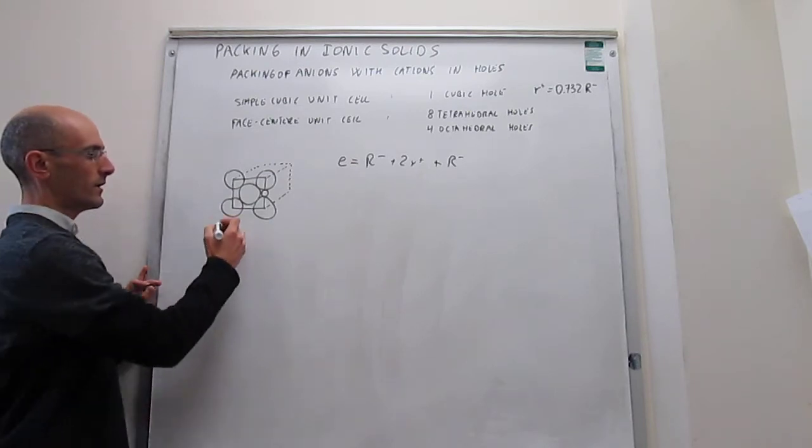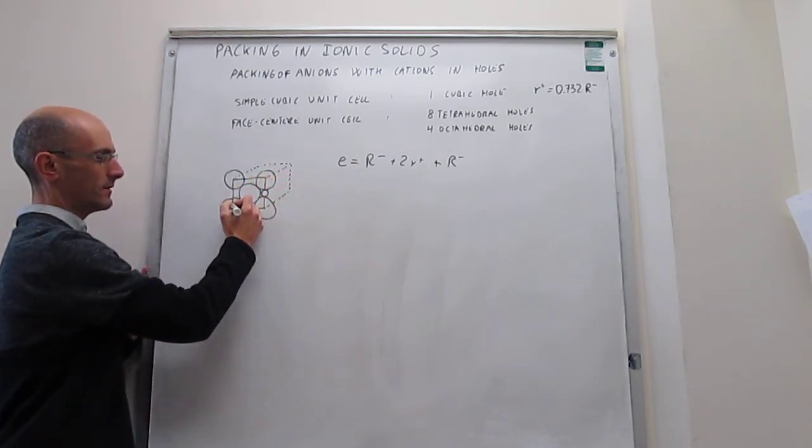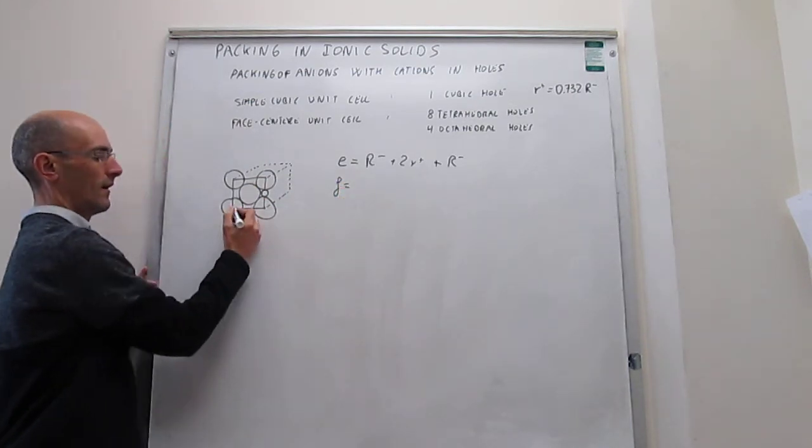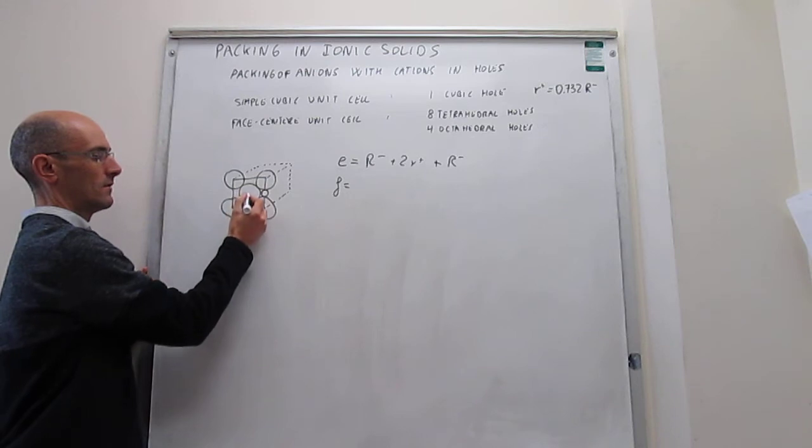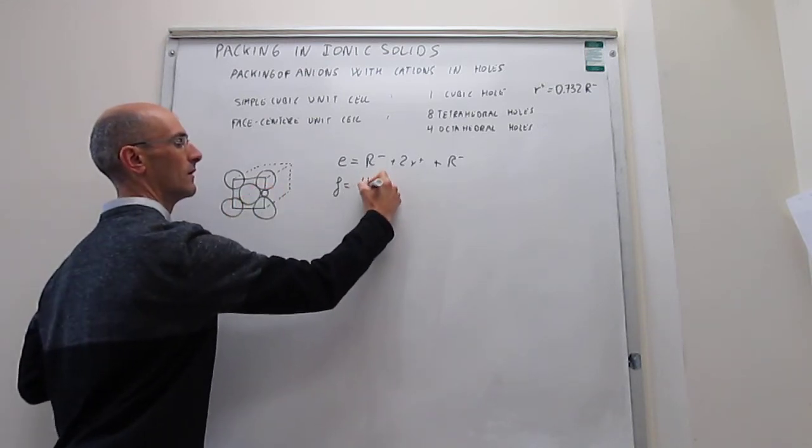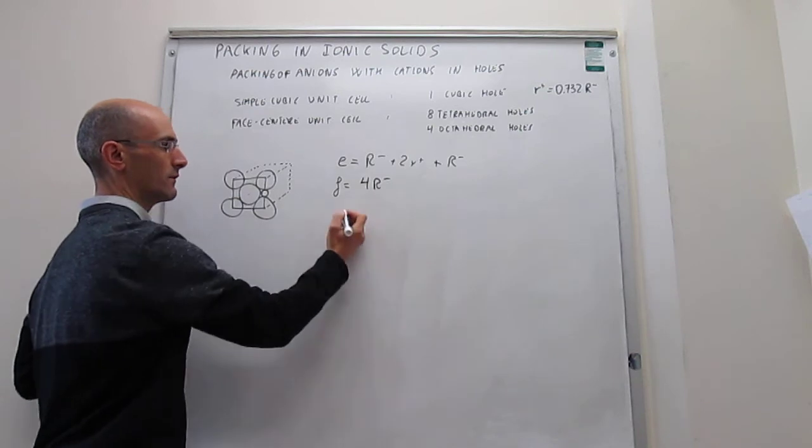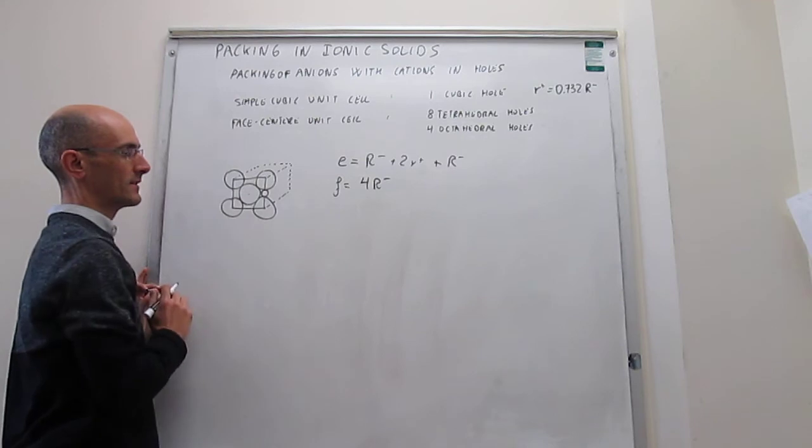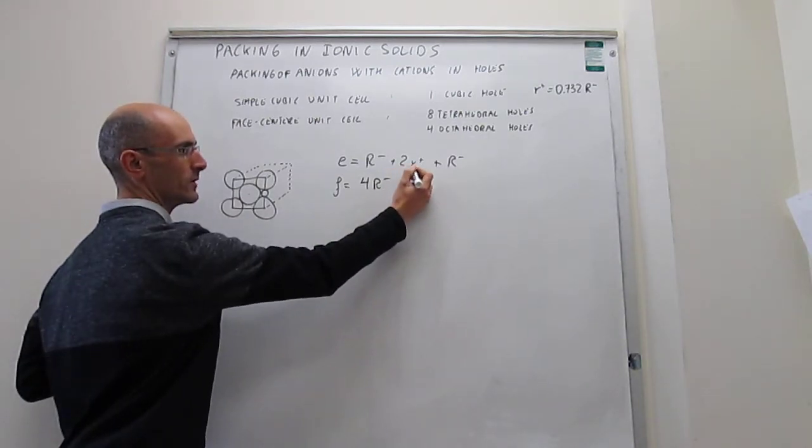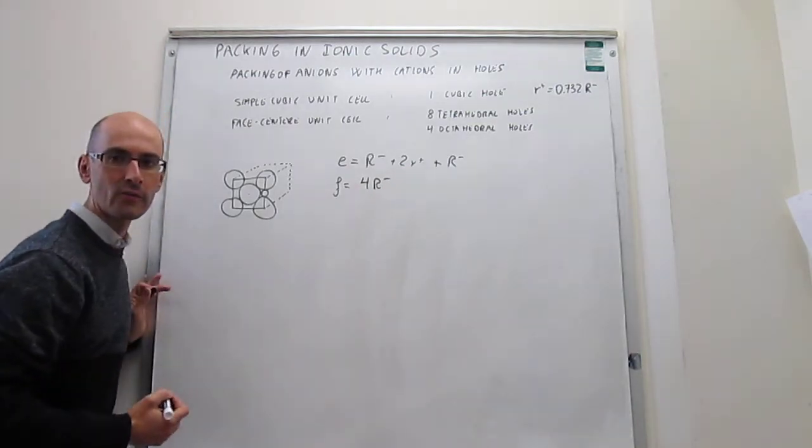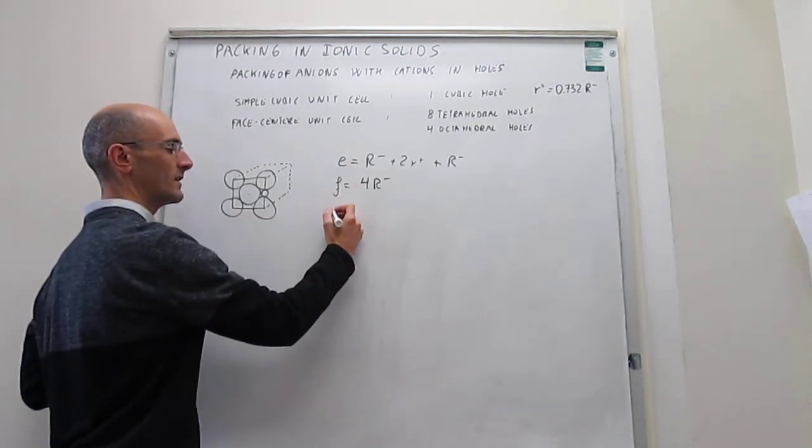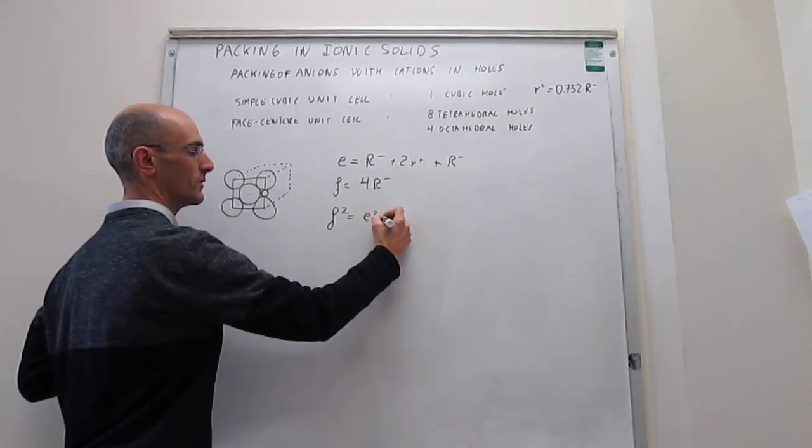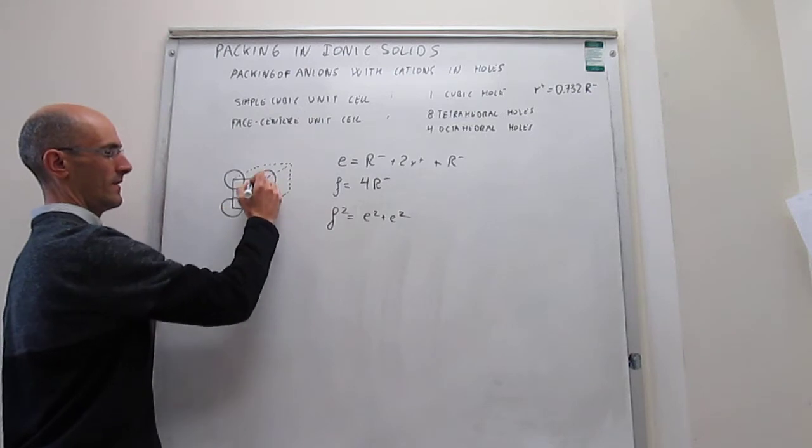At the same time, we know that this face diagonal that you have right here is actually the sum of four anion radii: one, two, three, and four. So if we're able to relate this edge and face diagonal for this structure, then we will be able to find a relationship between the cation radius and the anionic radius. And of course that is provided by your Pythagorean theorem, in which you have that F² is equal to E² plus E².